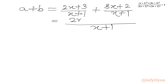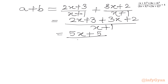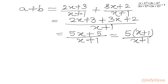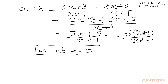We will simply add the numerators: 2x+3 plus 3x+2 gives us 5x+5, over x+1. Taking 5 common from the numerator over x+1, we can cancel x+1 from numerator and denominator. Our second equation becomes a plus b equal to 5. This is equation number 2.